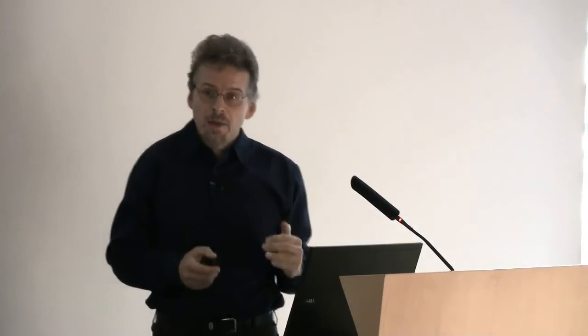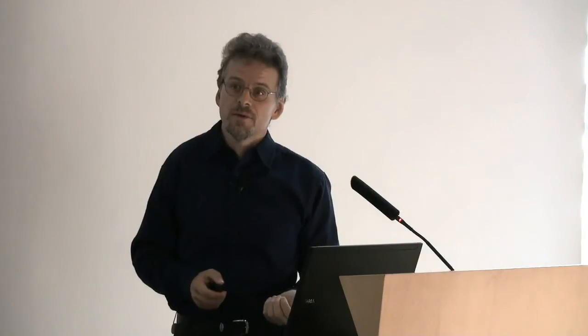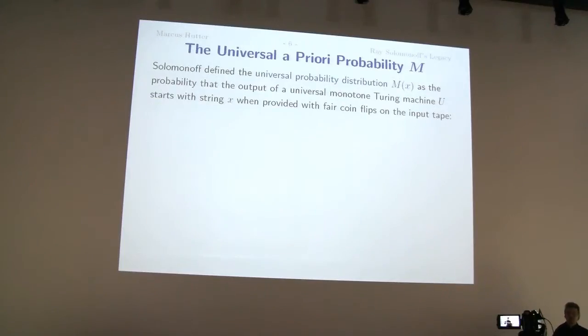So Solomonoff defines the universal a priori probability distribution, M of X, as the probability that the output of a universal monotone Turing machine U starts with string X when provided with fair coin flips on the input tape. That means you have a universal Turing machine, you have an input tape, and an output tape. And rather than putting some specific program on the input tape, you put random noise on the input tape. This Turing machine, this universal Turing machine, will do something. I mean, often it will just halt or does nothing or loop. But sometimes it will output something. And since you have uniform noise on the input tape, there will be a probability distribution on the output tape. And M of X is the probability that X is on the output tape. Or more precisely, that there's a string on the output tape that starts with X.